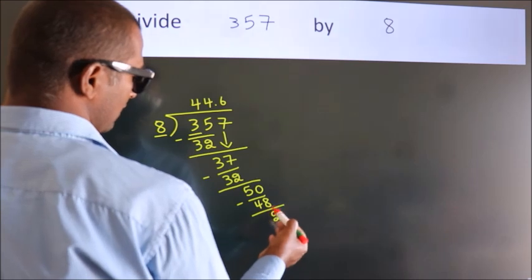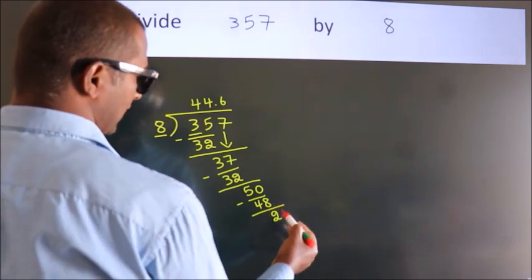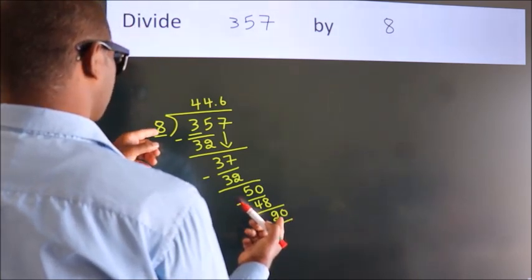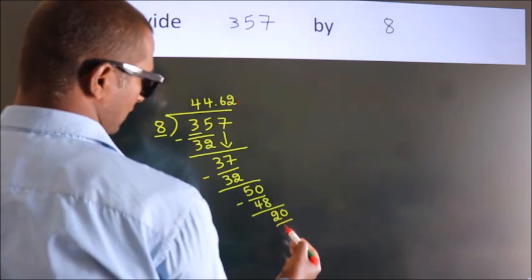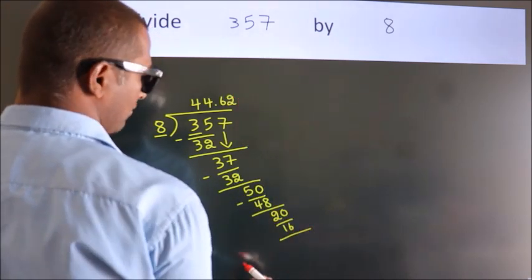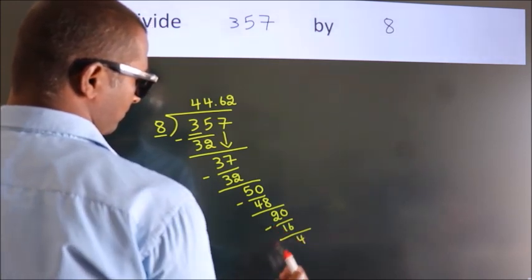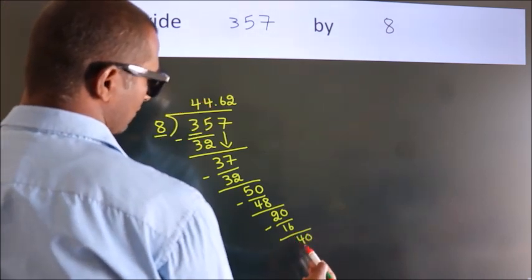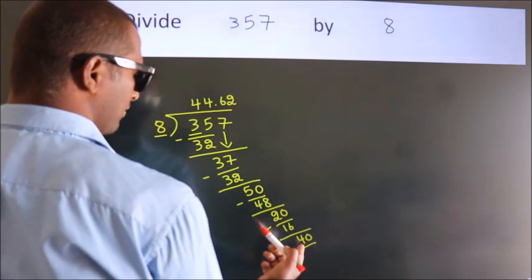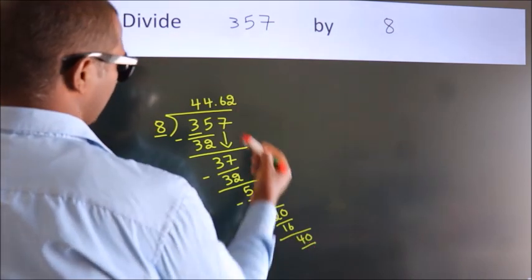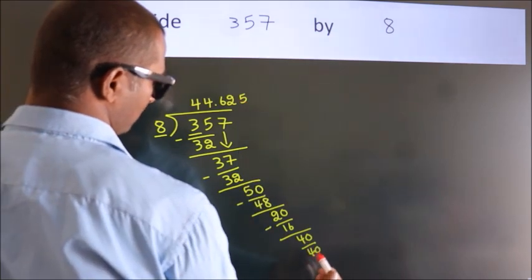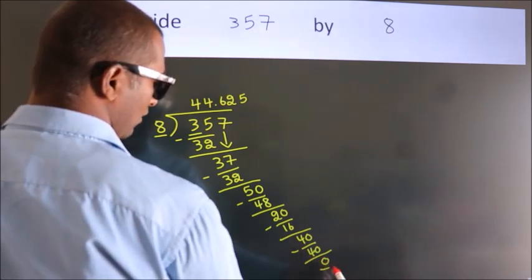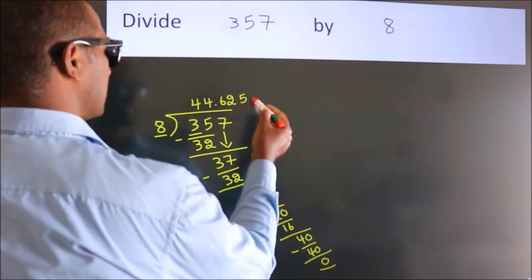After this, we already have the decimal, so directly take 0. So 20. When do we get 40? In the 8 table, 8 fives, 40. Now we subtract. We get 0. Here we got remainder 0, so this is our quotient.